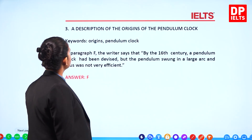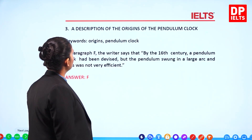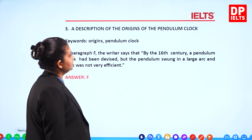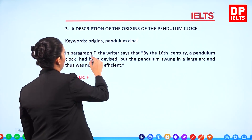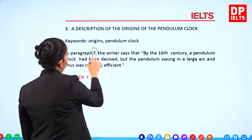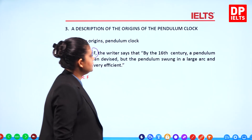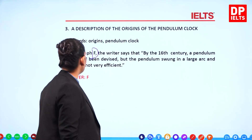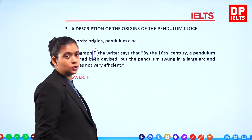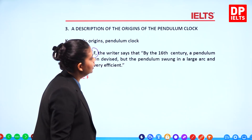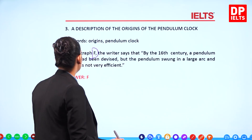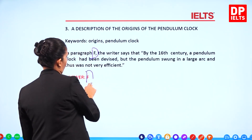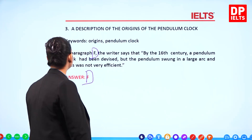Question 3: 'A description of the origins of the pendulum clock.' This is in paragraph F, where the writer says that by the 16th century a pendulum clock had been devised, but the pendulum swung in an enlarged arc and was thus not very efficient. So the answer is definitely paragraph F.